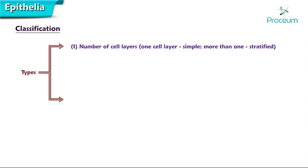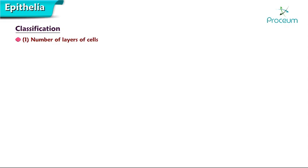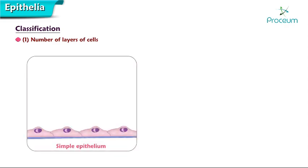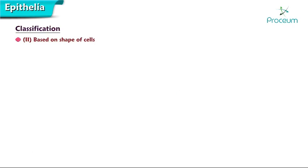Epithelia are classified into various types based on the number of cell layers — one cell layer is simple, and more than one is stratified — and the shape of the superficial cells. In simple epithelium, cells are arranged in a single layer. In stratified epithelium, also known as compound epithelium, cells are arranged in more than one layer. All cells composing a simple epithelium contact the basal lamina, whereas in stratified epithelia only the deepest cell layer contacts the basal lamina.